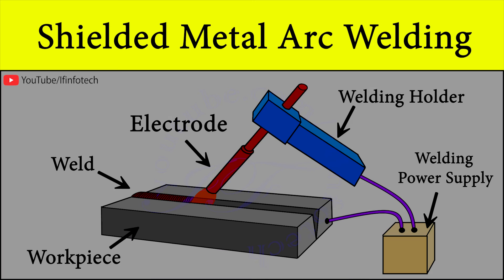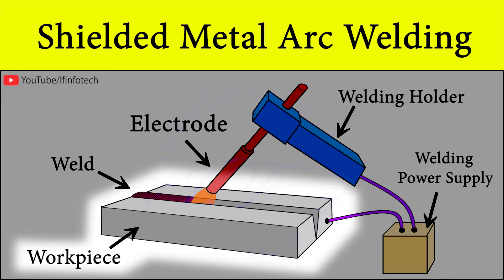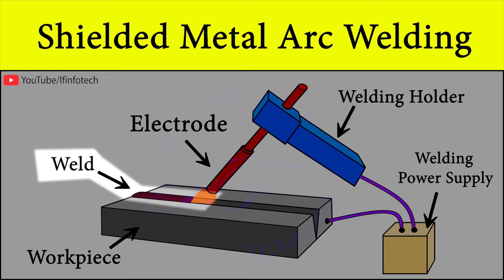In this process, an electric current from the welding power supply is used to form an electric arc between the electrode and the metals which are to be joined. The workpiece and electrode melt, forming a pool of molten metal that cools to form a joint. The arc itself is shielded with some flux or slag, which protects the weld pool from surrounding atmosphere contamination.